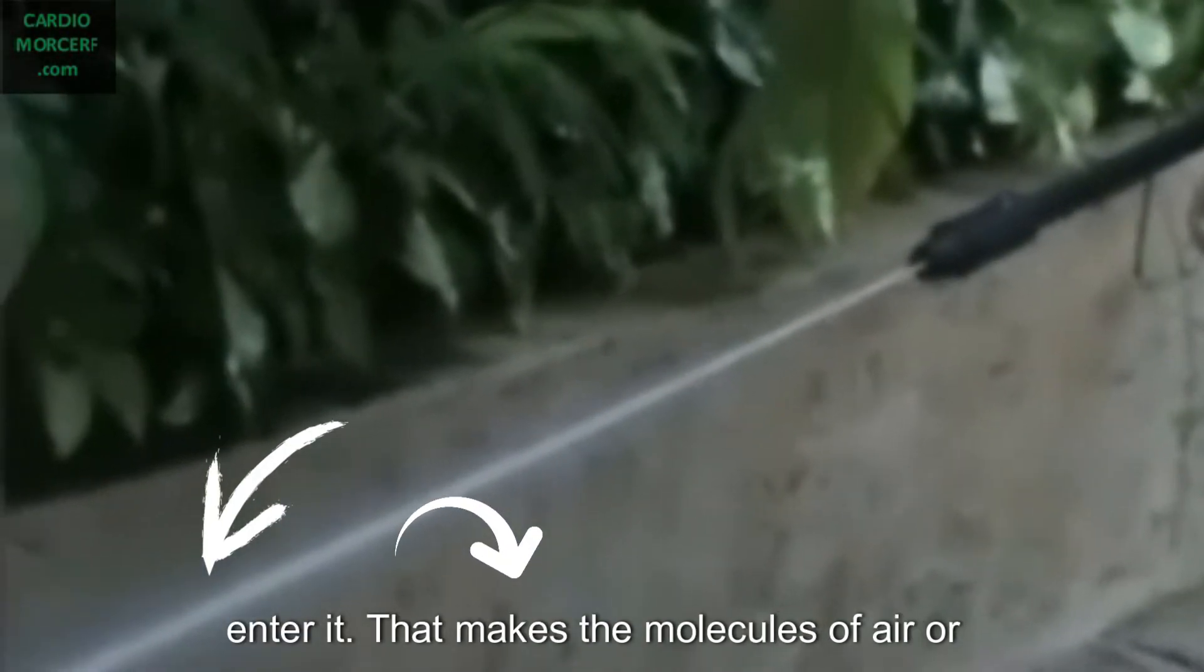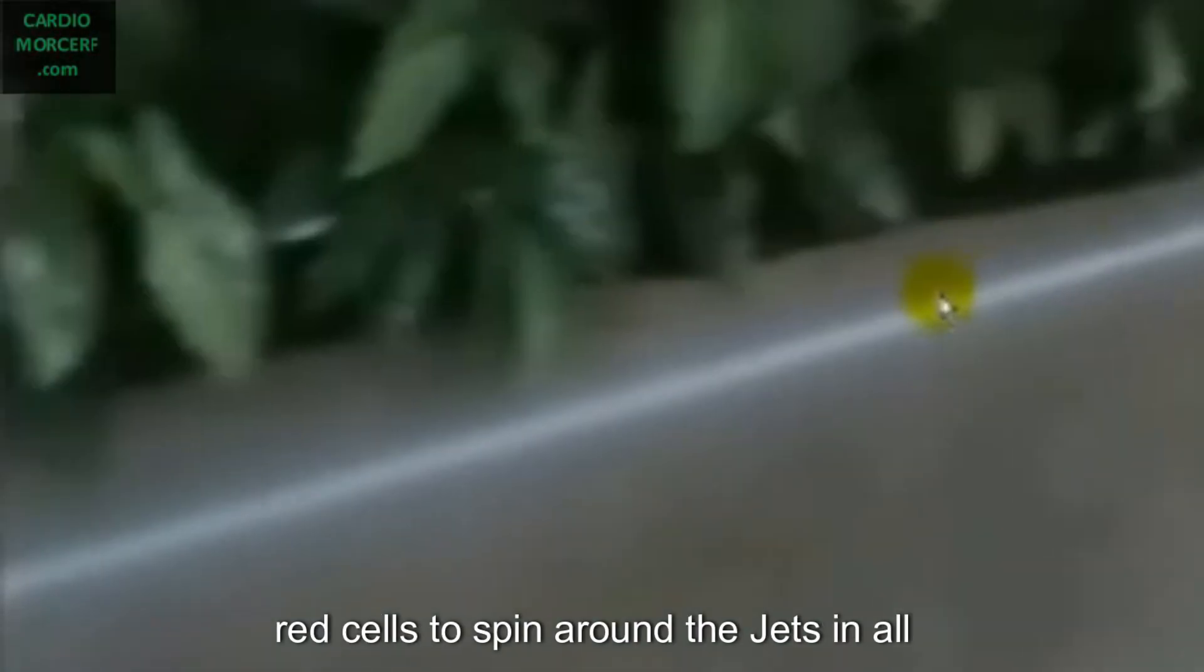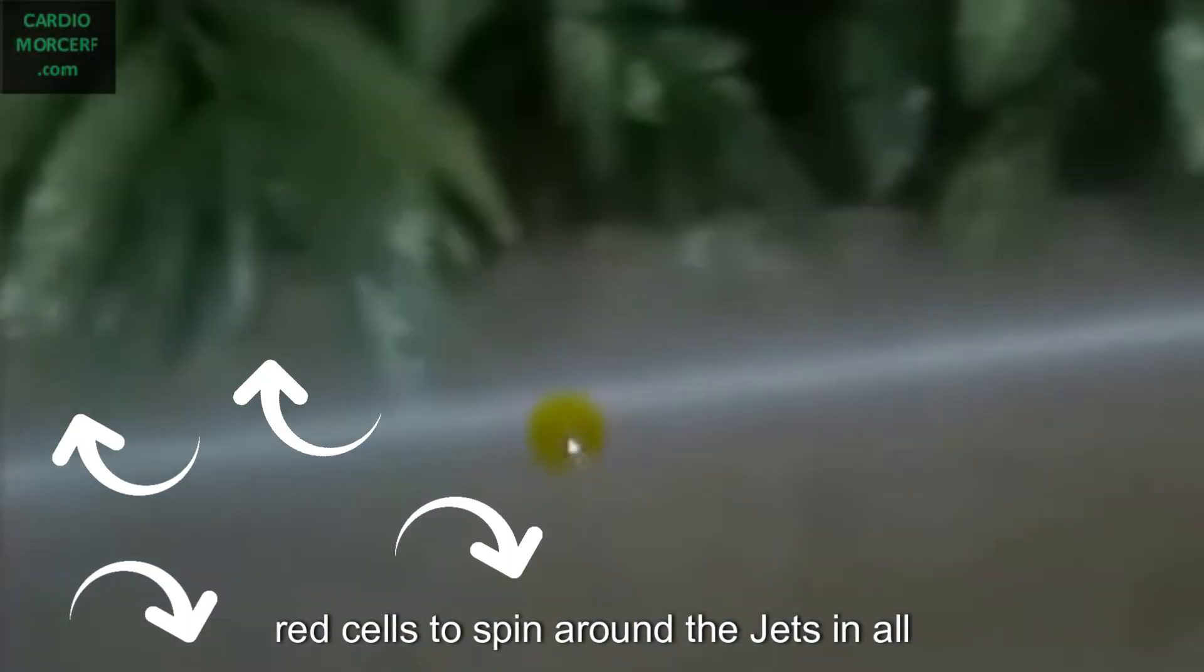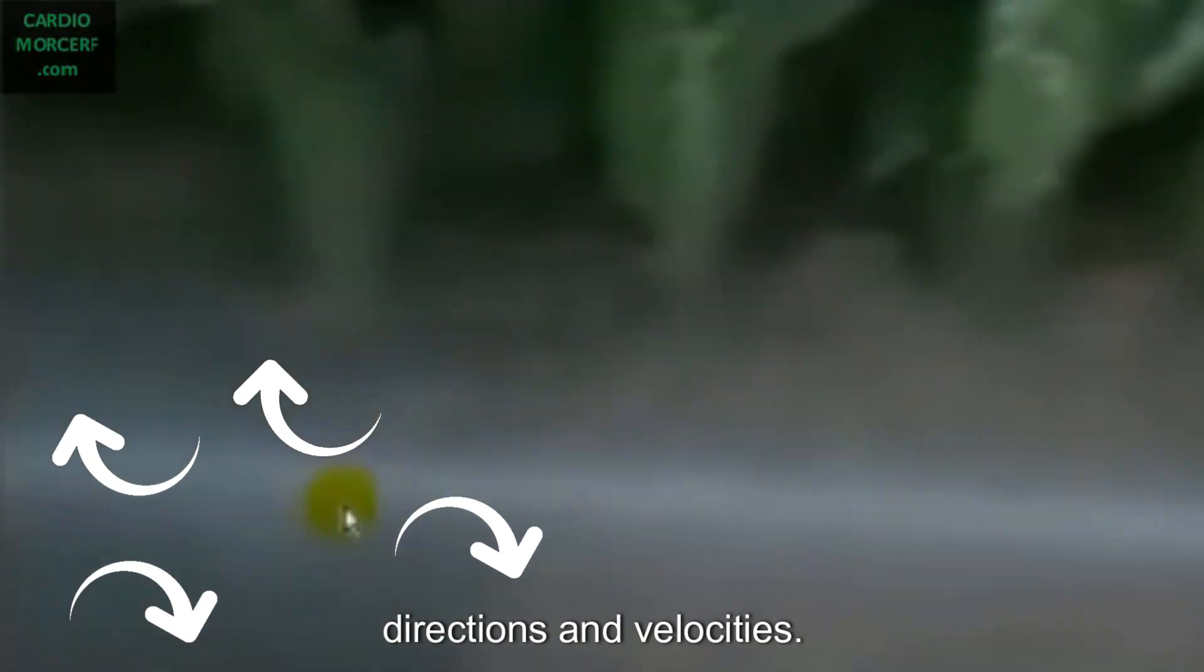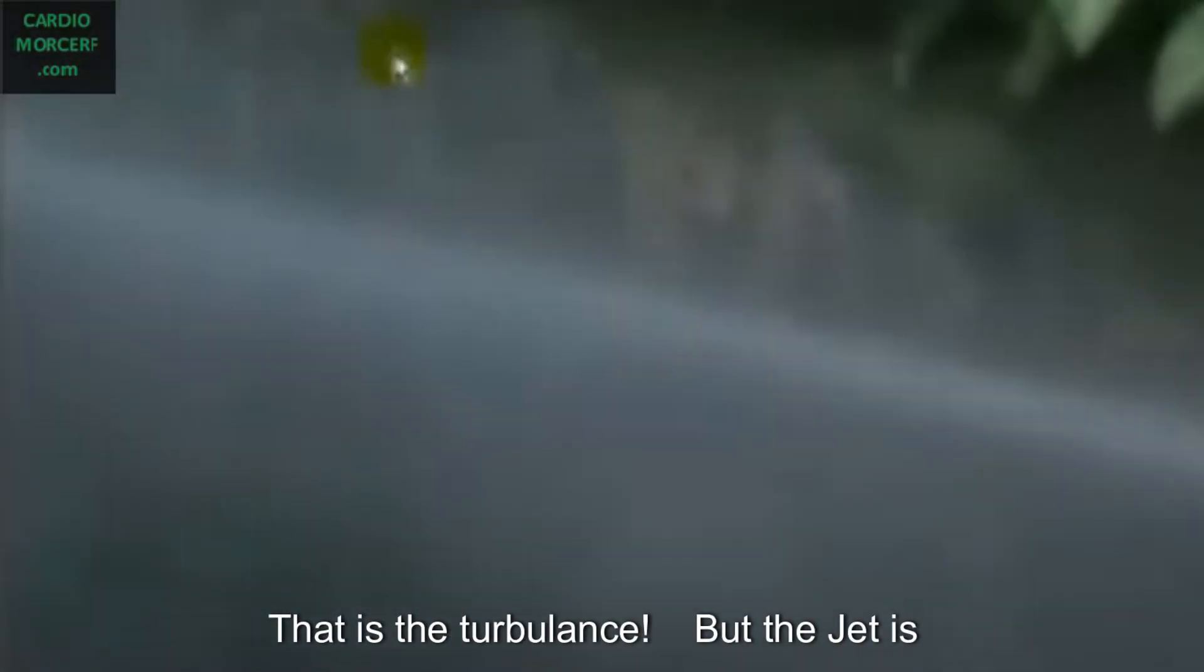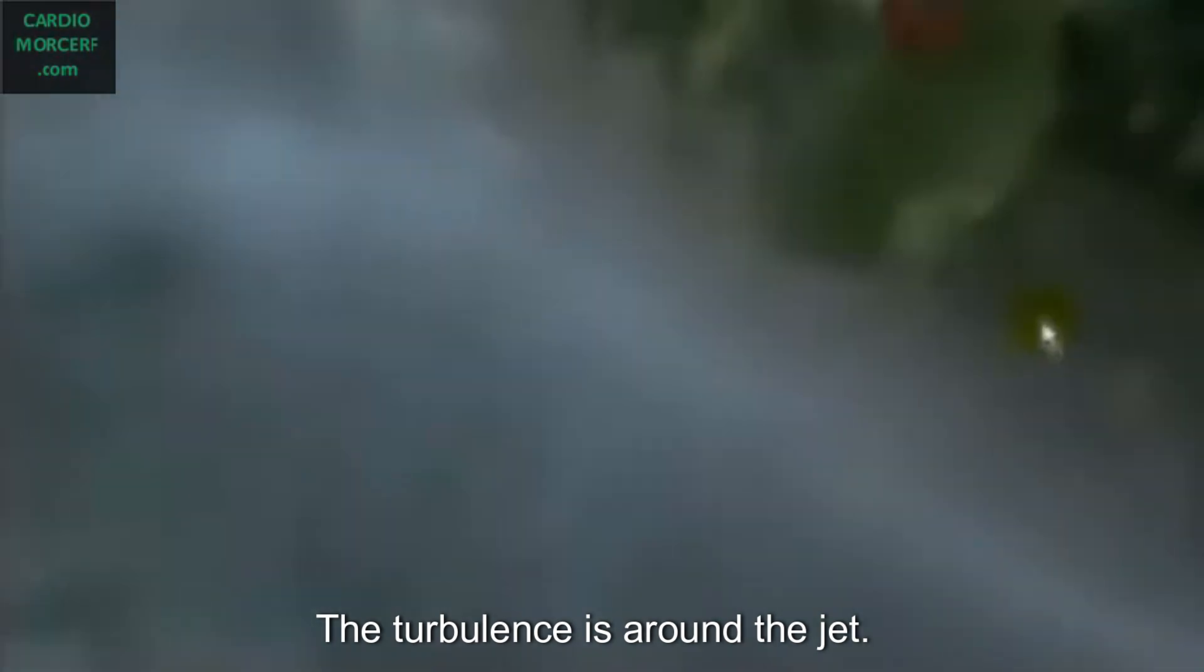That makes the molecules of air, or the red cells, to spin around the jet, in all directions and velocities. That is the turbulence. Then the jet is laminar. The turbulence is around the jet.